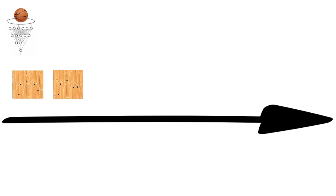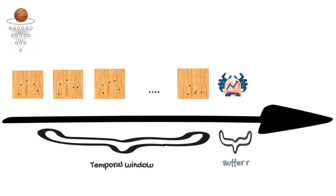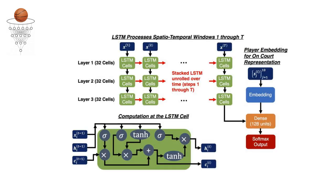Deep Hoops uses a fixed temporal sequence of snapshots to predict the probability of each terminal action within the follow-up time period. Deep Hoops includes a three-layer stacked LSTM network with 32 cells each, together with an embedding layer for the players.